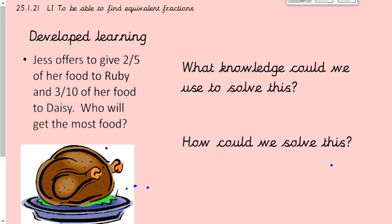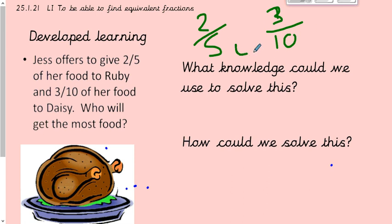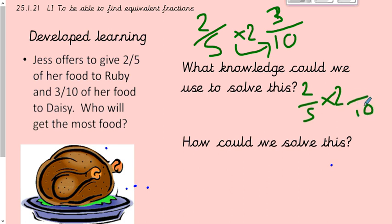We're moving on to some developed learning — using our knowledge to work out a word problem. Jess offers to give two fifths of her food to Ruby and three tenths of her food to Daisy. Who will get the most food? We can't compare these fractions until they have the same denominator. So we need to make two fifths have the same denominator as three tenths. We times it by two: five times two is ten, two times two is four. So two fifths is equivalent to four tenths.